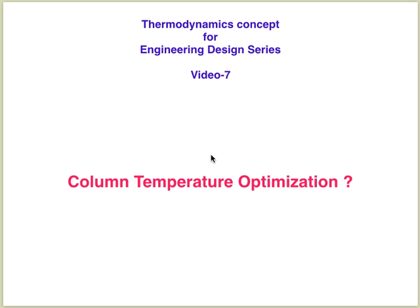Today we will discuss the seventh video of the thermodynamics concepts for engine design series. In this video we will discuss column temperature optimization. In the first video we already discussed column operating temperature and operating pressure calculations, where we learned the optimization of column pressure so that the efficiency of the design column is high and the column produces more purity of the lighter components in the top product.